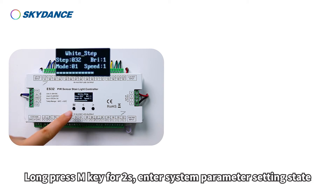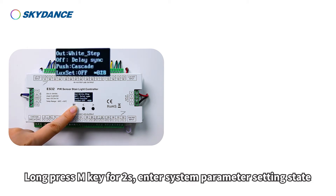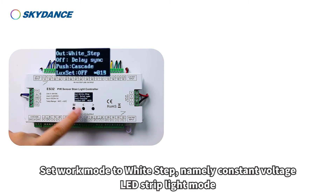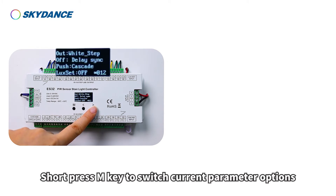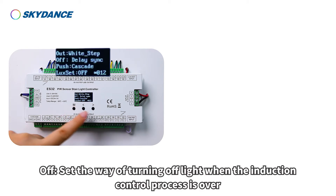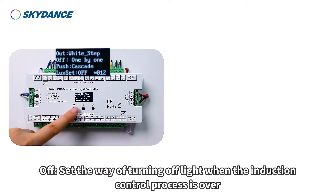Constant Voltage LED Strip Light Mode. Long press the M key for two seconds to enter system parameter setting state. Set work mode to wide step, namely Constant Voltage LED Strip Light Mode. Short press the M key to switch current parameter options. 'Off': set the way of turning off light when the induction control process is over.